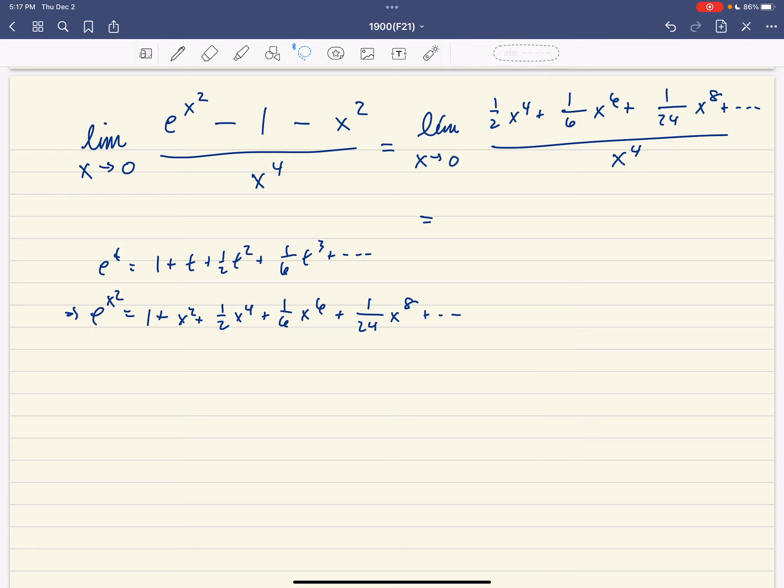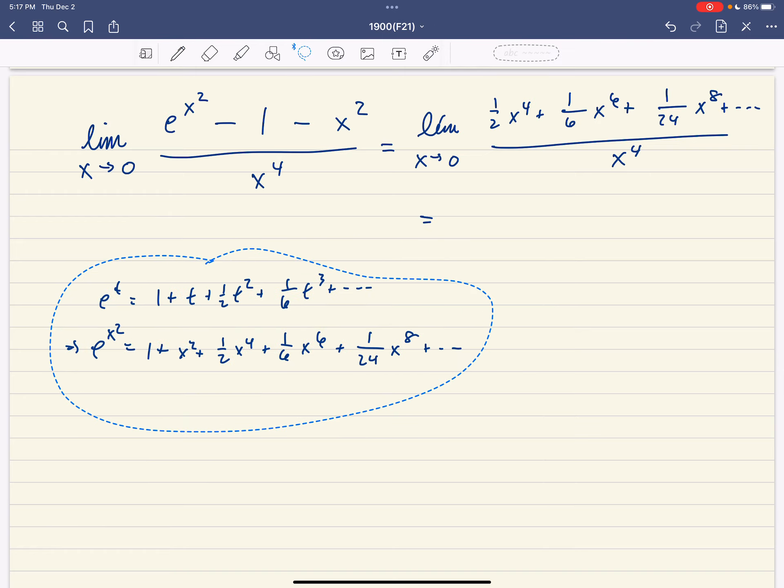And notice what happens. Notice that when we divide by x to the 4th, we're going to have all of our powers in the numerator decrease by 4. So we're going to have 1 half plus 1 sixth x squared plus 1 over 24 x to the 4th and so on. And all these other terms are going to be 0 except for the first term because those powers cancel completely and we end up with 1 half.